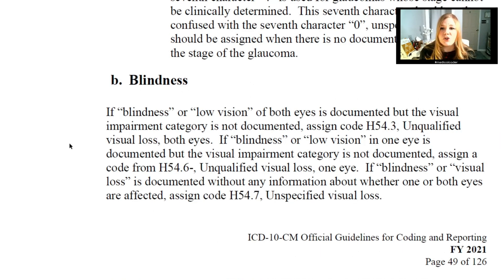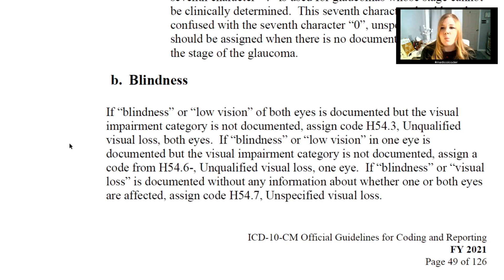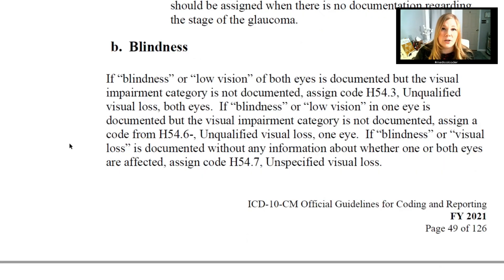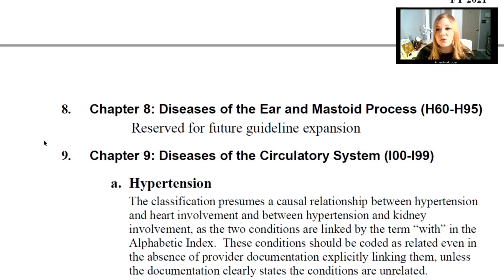If blindness or low vision of both eyes is documented but the visual impairment category is not documented, assign code H54.3, unqualified visual loss both eyes. If blindness or low vision in one eye is documented but the visual impairment category is not documented, assign a code from H54.6, unqualified visual loss one eye. If blindness or visual loss is documented without information about whether one or both eyes are affected, assign code H54.7, unspecified visual loss. Chapter eight, diseases of the ear and mastoid process, codes H60 through H95, does not have specific guidelines, so we'll pick up next week with chapter nine, diseases of the circulatory system.